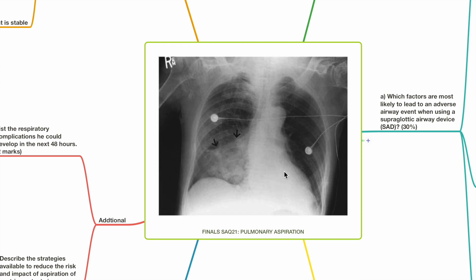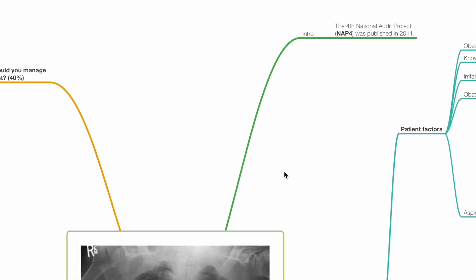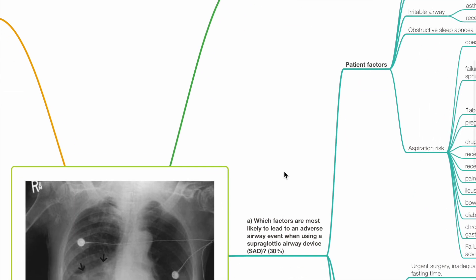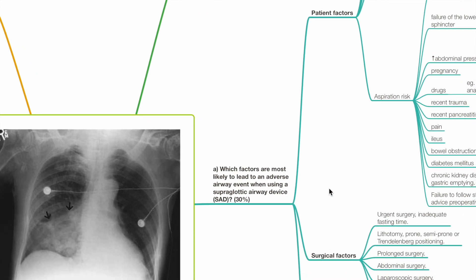Finals SAQ21 Pulmonary Aspiration. The 4th National Audit Project NAP4 was published in 2011. Which factors are most likely to lead to an adverse airway event when using a supraglottic airway device, SAD?